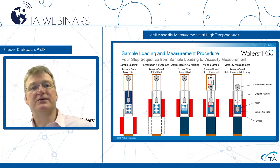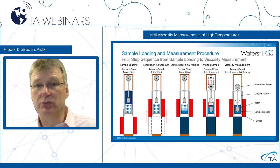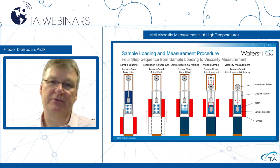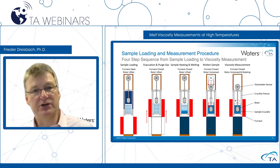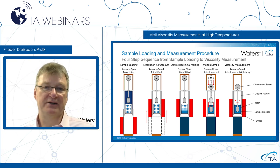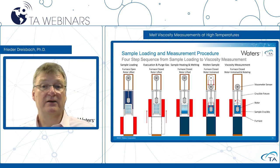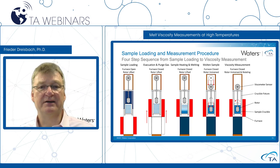This slide shows the measuring principle. Starting from the left: the sample crucible with sample is loaded as shown in the video. Then the furnace is lifted electrically. From this point, we can evacuate, remove the air, and purge the inner volume to provide an oxygen-free atmosphere before heating. Then we start heating the sample, the sample melts, the rotor is lowered from the top into the molten sample, and finally the measurement starts by controlling rotational speed and measuring the torque required.